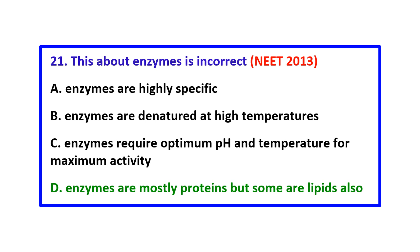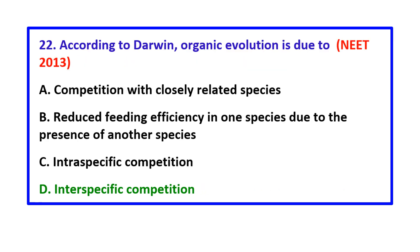Enzymes are denatured at high temperature. Enzymes have an optimum pH and temperature for maximum activity. Question 22: According to Darwin, organic evolution is due to — the correct answer is interspecific competition.